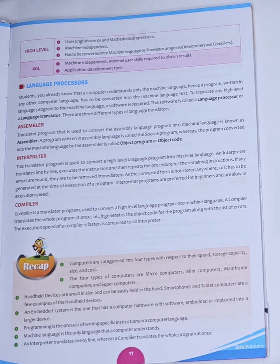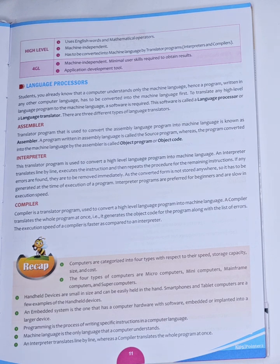An assembler is a translator program which will convert an assembly language program into machine language program. The program which is written in the assembly language is called the source program, whereas the program which is converted into machine language is called the object program.